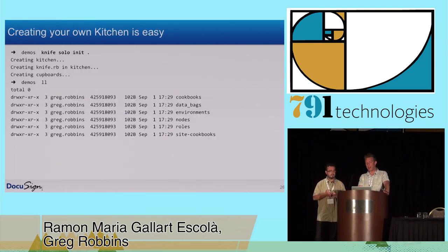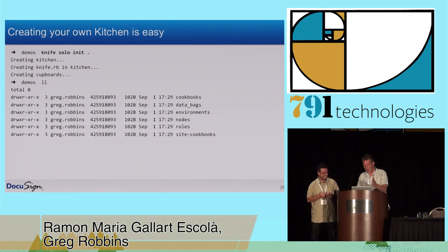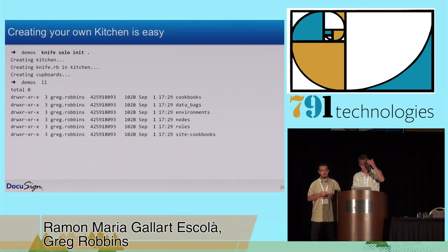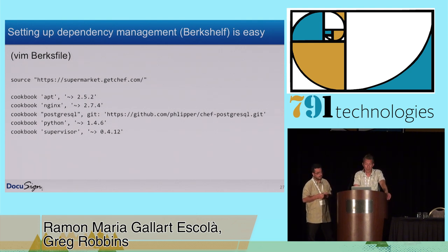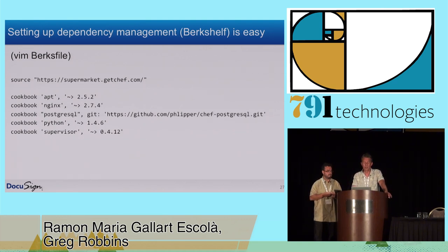Creating your own kitchen is really easy. By running 'knife solo init dot', knife being the command-line tool, it set up the entire directory structure for the kitchen. Setting up dependency management with Berkshelf was also really easy — all I did was create a Berksfile in the root directory of the project, list the source which is the supermarket, and then put in the different cookbooks I want to grab to set up my machines. Those can be local, remote, from the supermarket, from GitHub, et cetera.